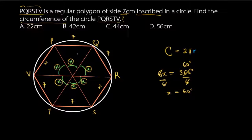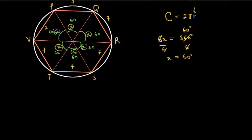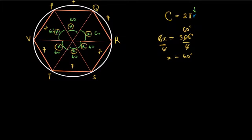Our aim is to find the radius, because once we have the radius we can find the circumference. To do this, let's bring out one of the triangles formed — specifically triangle OTS — and work with it.